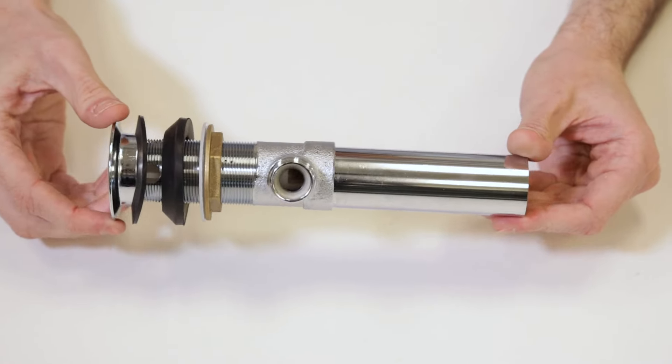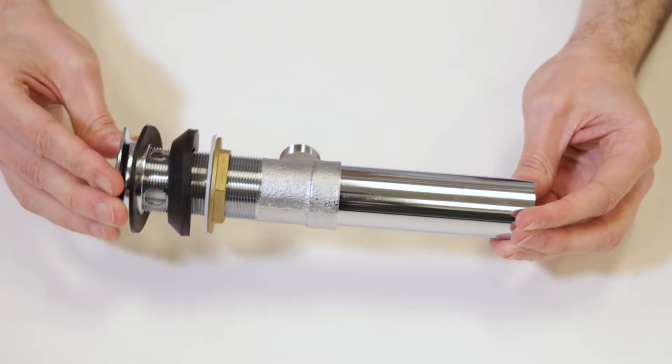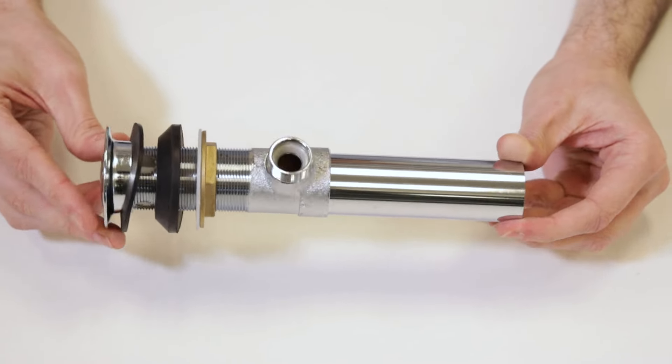This pop-up lav drain assembly is included with many Simmons lav faucets and it can stand up to everything you throw at it because it's all metal. It's pretty straightforward to install but let's go over some minor things that may be confusing for first timers.